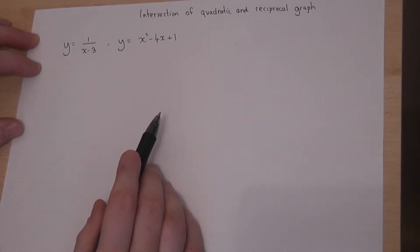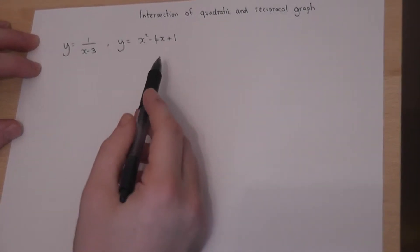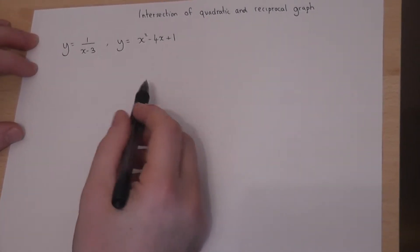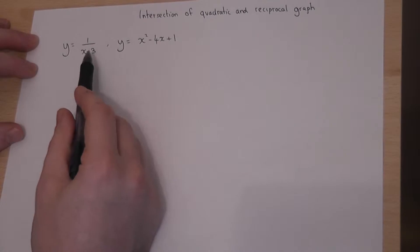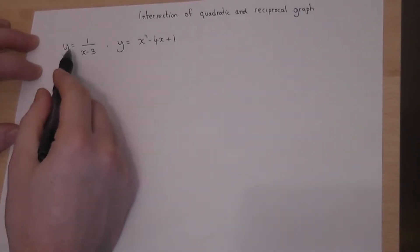This video looks at how we can solve where a reciprocal graph intersects a quadratic graph using simultaneous equations. Now where these two graphs intersect, the y coordinates must be equal.